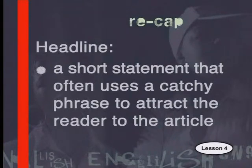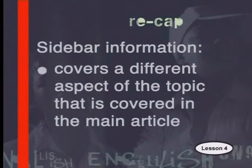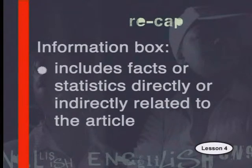We have learnt a number of terms today about feature articles. A headline is a short statement that often uses a catchy phrase to attract the reader. A blurb is a short description or introduction to the article. Sidebar information covers a different aspect of the topic covered in the main article and is made to look visually separate. An information box includes facts or statistics directly or indirectly related to the article. Here is a task for you based on what we've learnt today.